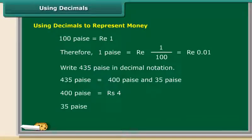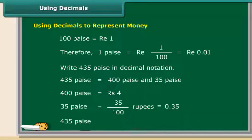35 paise are equal to 35 upon 100 rupees, that is 0.35. So, 435 paise are equal to rupees 4.35.